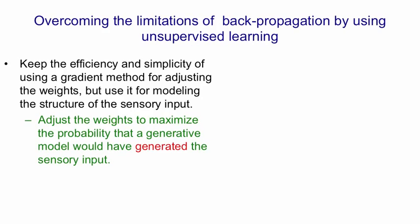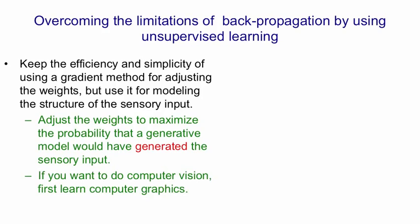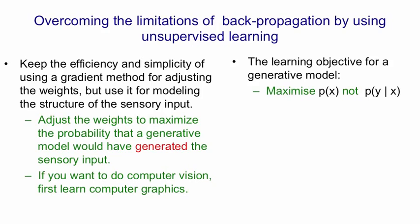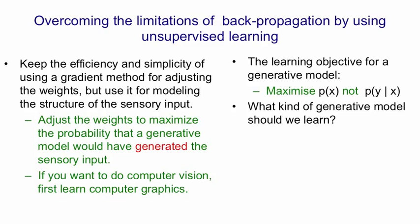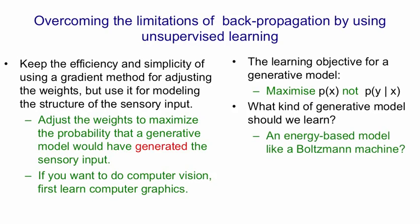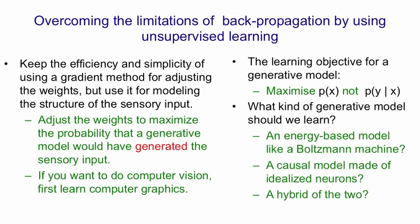We already saw that in learning Boltzmann machines. One way to think about it is, if you want to do computer vision, you should first learn to do computer graphics. To first order, computer graphics works and computer vision doesn't. The learning objective for a generative model, as we saw with Boltzmann machines, is to maximise the probability of the observed data, not to maximise the probability of labels given inputs. Then the question arises: what kind of generative model should we learn? We might learn an energy-based model like a Boltzmann machine, or we might learn a causal model made of idealised neurons — and that's what we'll look at first — or finally a hybrid of the two, and that's where we'll end up.